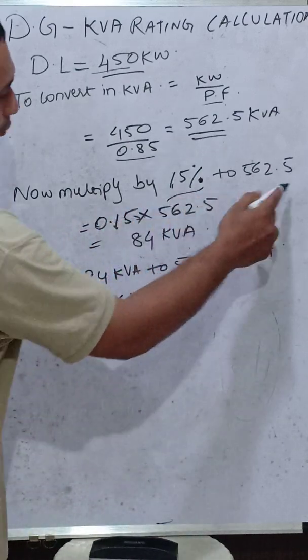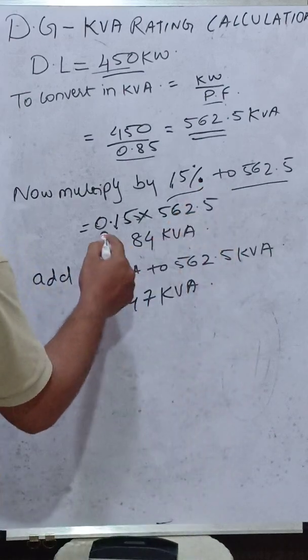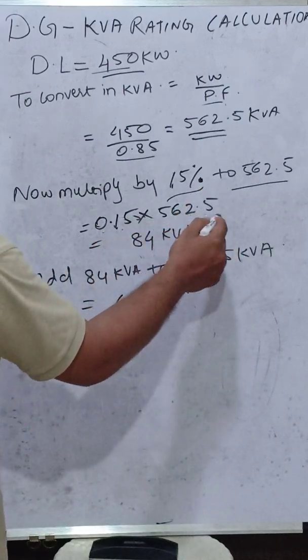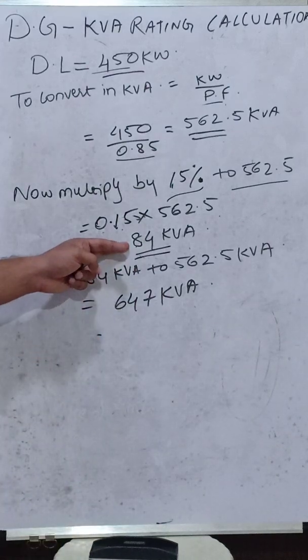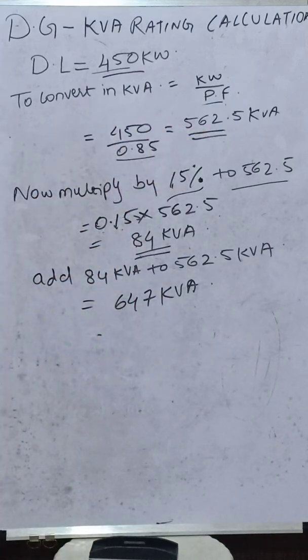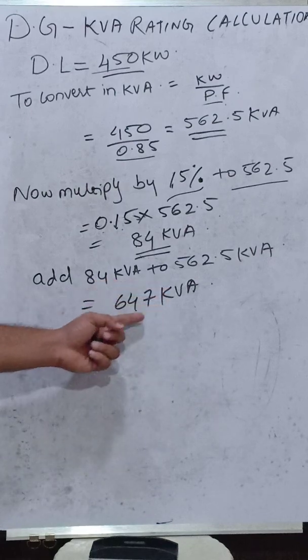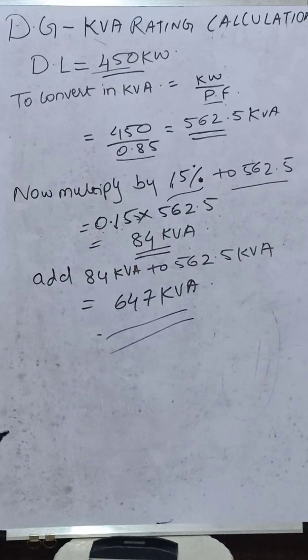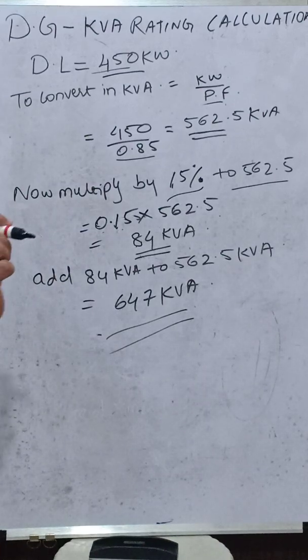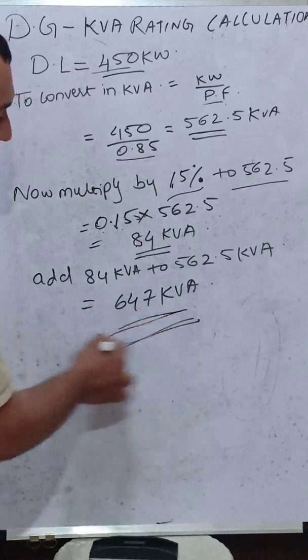By multiplying 15% to 562.5, that is 0.15 into 562.5, will give a kVA of 84 kVA. We will add this 84 kVA to the demand kVA. The total kVA comes out to be 647 kVA. Now the total capacity of the DG after considering the future expansion and the losses which might take place in the DG set, the selected and suitable DG rating should be 647 kVA.